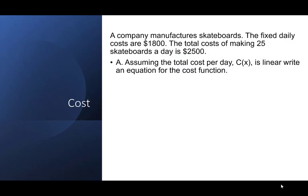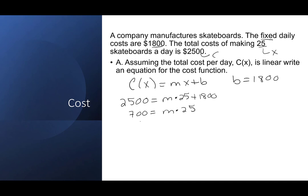Our first example is on cost. A company manufactures skateboards. The fixed costs are $1,800 and the total cost of making 25 skateboards a day is $2,500. Assuming the total cost per day C(X) is linear, write an equation for the cost function. We know C(X) = MX + B because it's linear. B is our fixed cost of $1,800. We can find M because when X is 25, C equals 2,500. So 2,500 = M × 25 + 1,800, which gives us 700 = 25M, and M is 28. That allows us to write C(X) = 28X + 1,800.